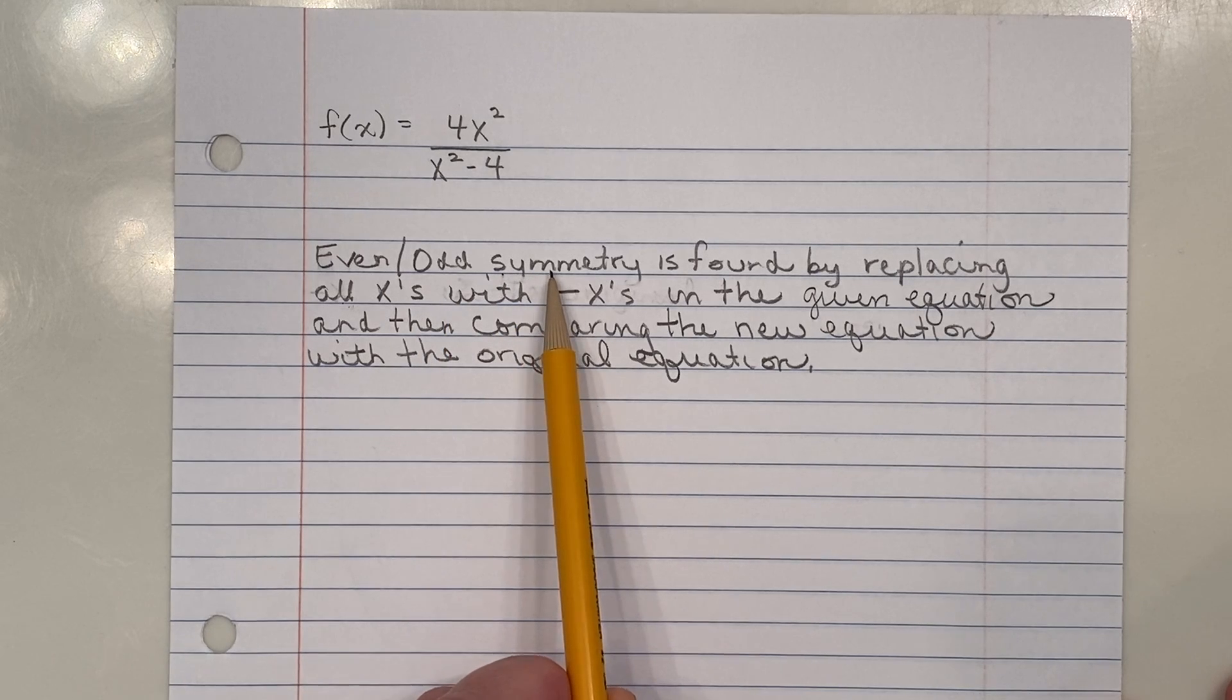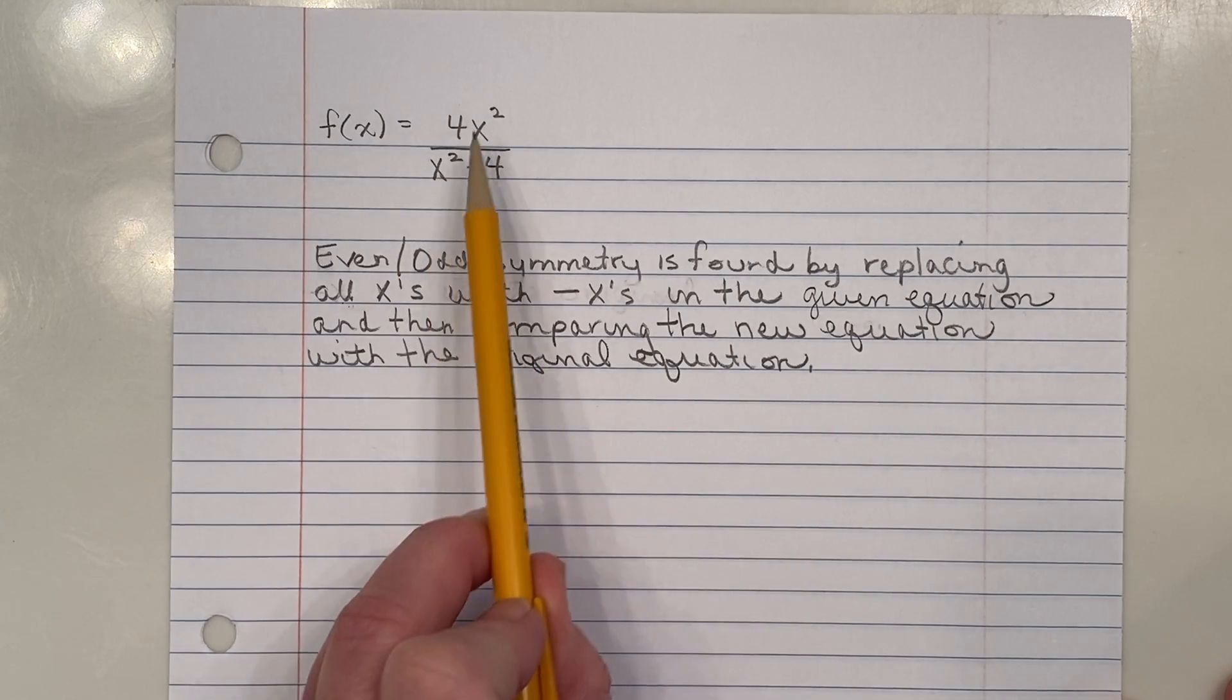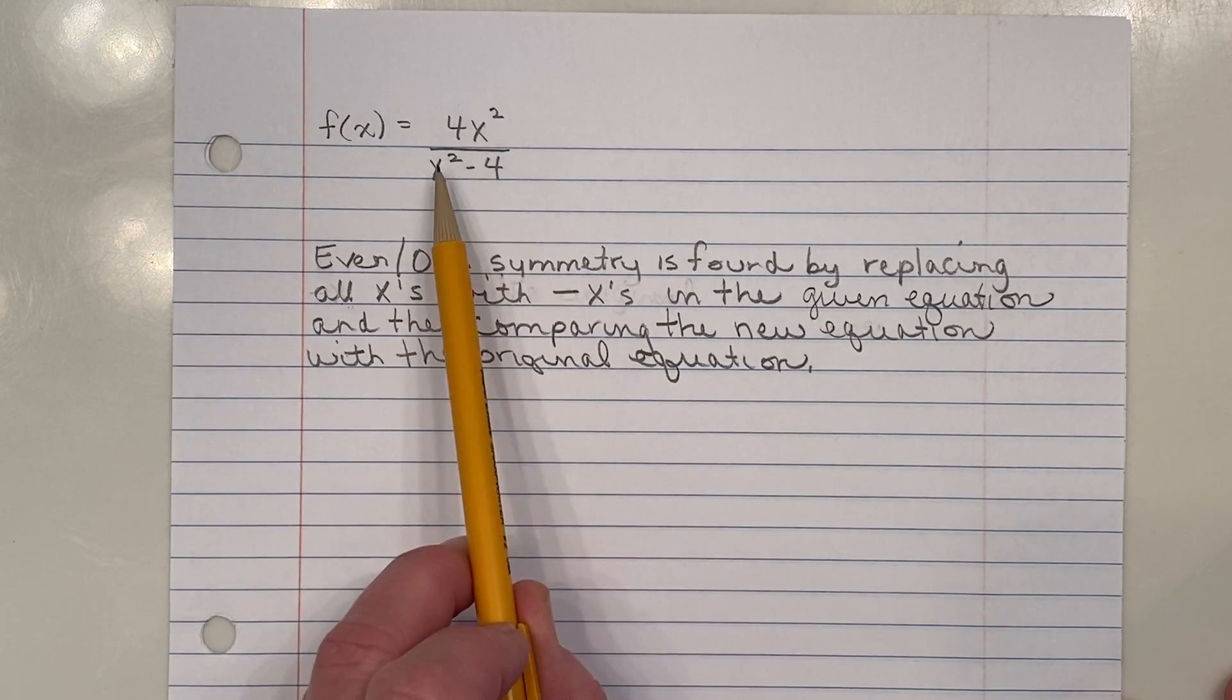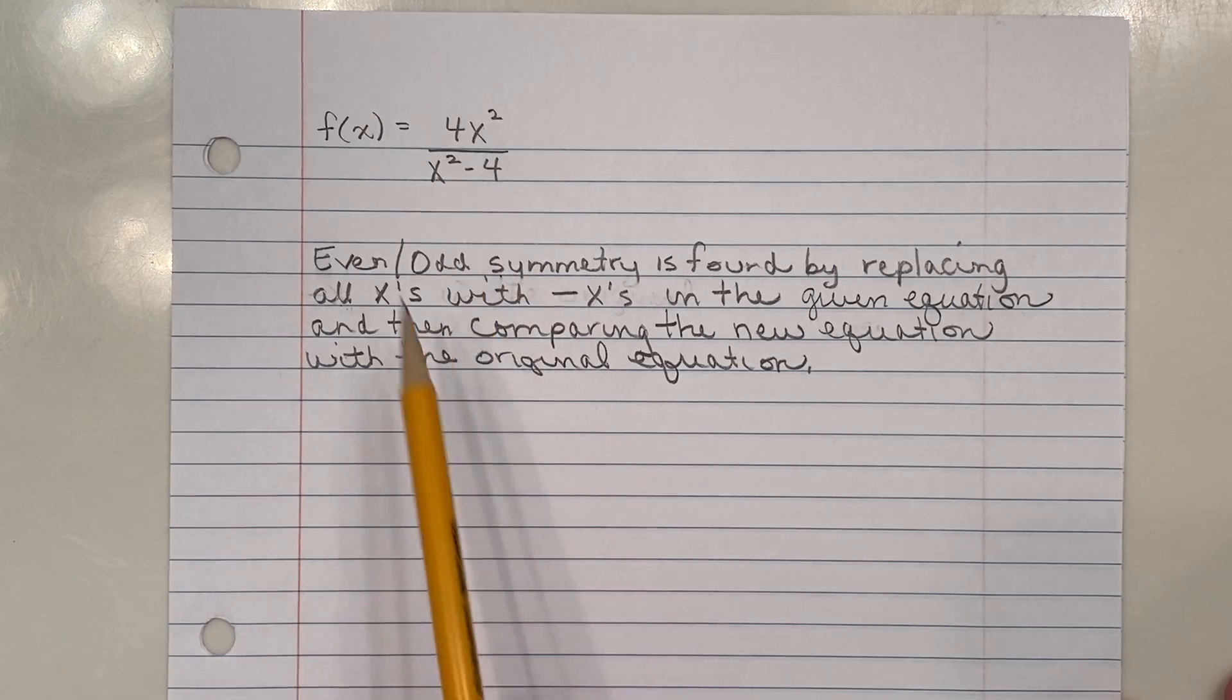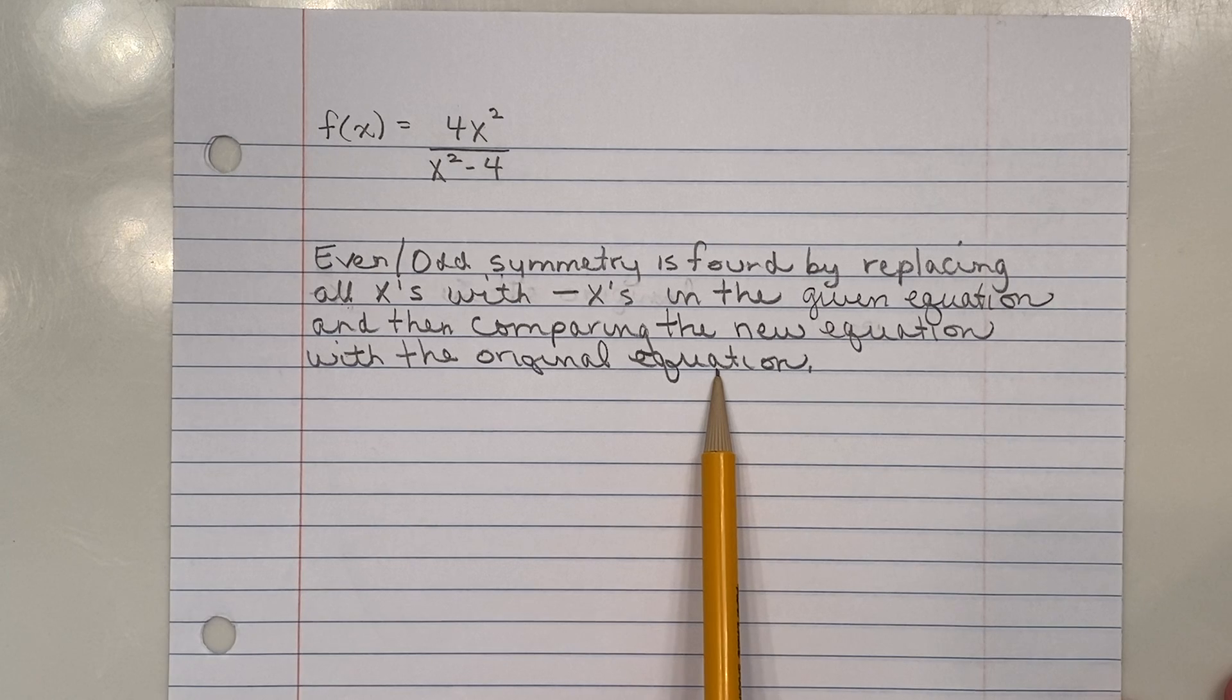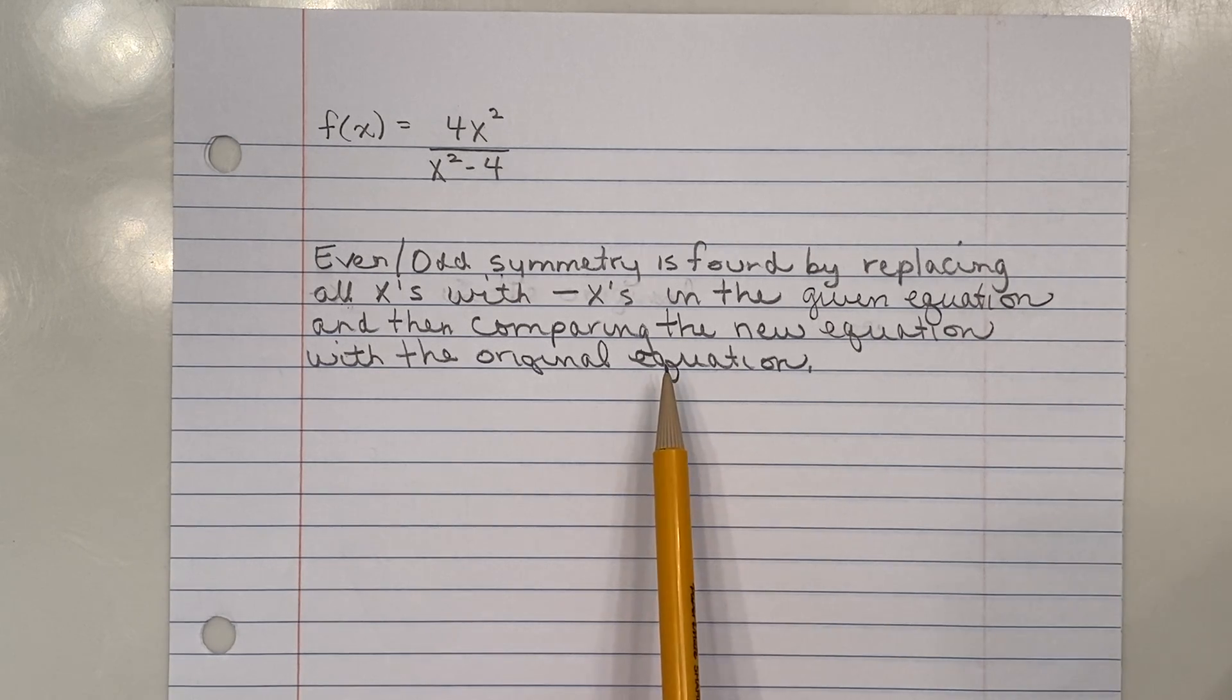A reminder, even odd symmetry is going to be found by replacing all the x's with negative x's in this given equation. And then after we replace negative x in for all the x's, after we clean it up, we're going to compare the new equation we got with the original equation. And in that comparison, we'll know how to respond to the even odd question.